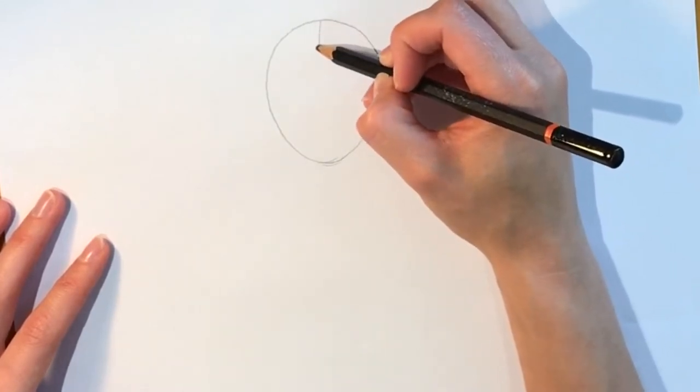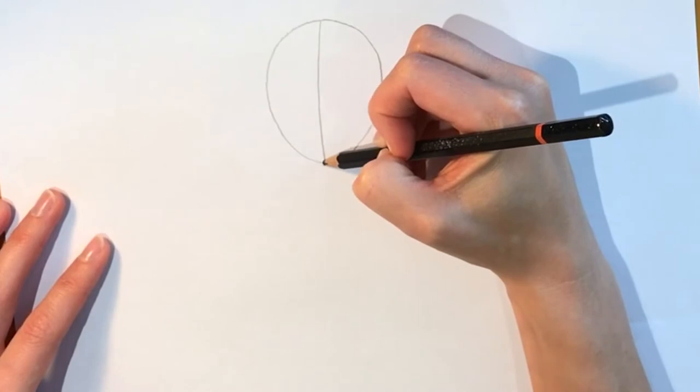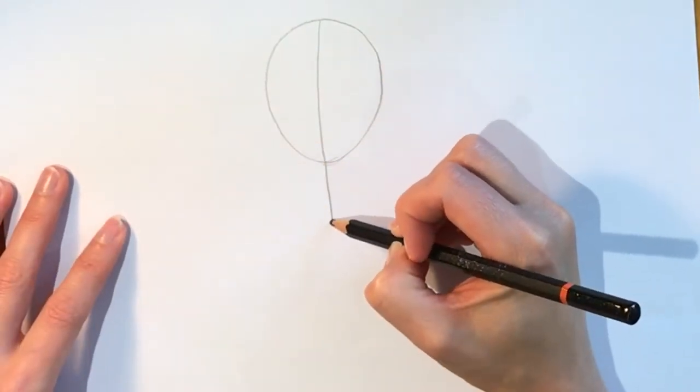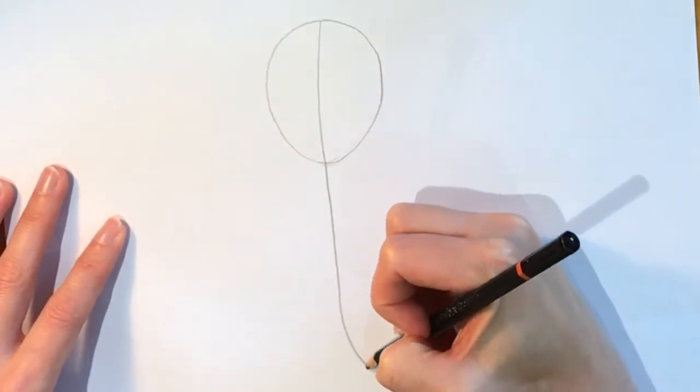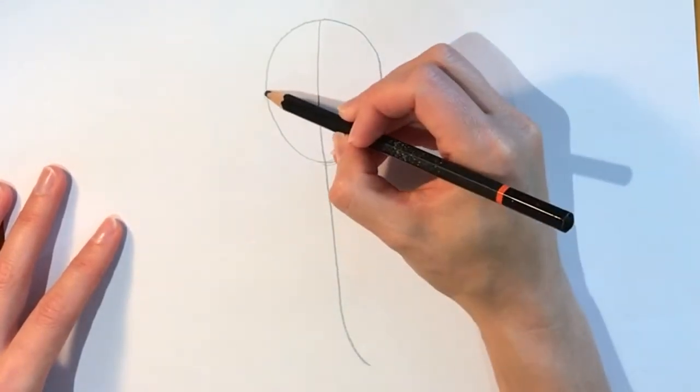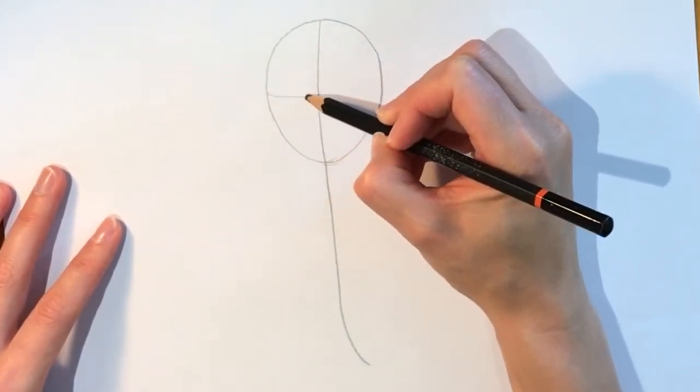Now cut that egg shape in half and extend that line all the way down. That's going to be the elephant's trunk, and then cut the egg shape in half again horizontally.